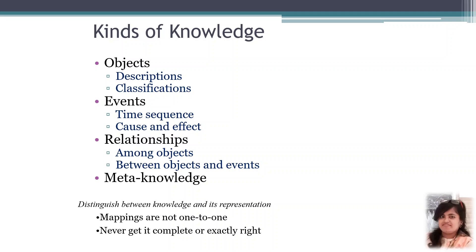How do we distinguish between knowledge and its representation? Mappings are not one-to-one, and it never gets completely or exactly right. These are the ways of representing knowledge and the different parameters for the knowledge domain.